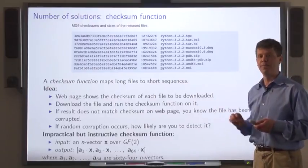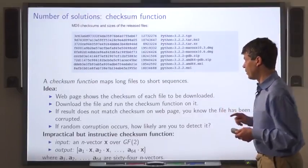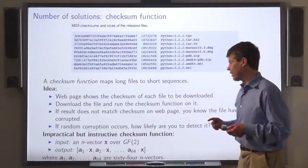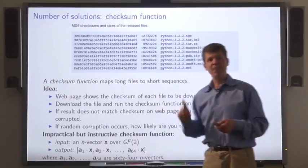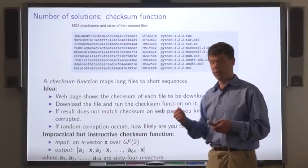We're going to use a sort of toy checksum to illustrate some of the ideas we've been exploring. So the checksum function looks like this. We're going to represent a file as an n vector over GF2, that is an n bit sequence.